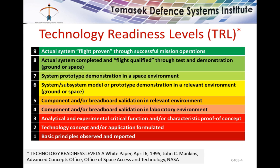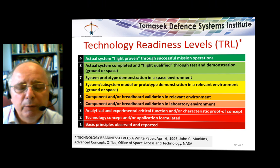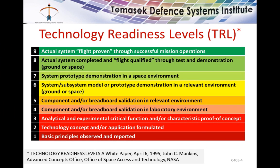So what is a TRL? On slide 4, I show NASA's version — basically nine levels of technology maturity. Level 1 is basic principles. Level 2 is technology concept formulation. Level 3 involves analytical and experimental critical function with a proof of concept, but no real hardware yet. Level 4 is a breadboard version in a laboratory environment. Level 5 takes it into a relevant environment. Levels 1 through 5 are the basic research areas.